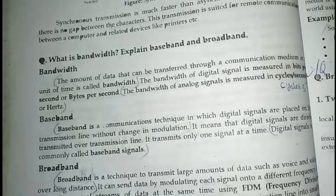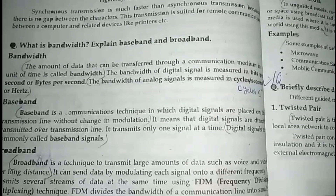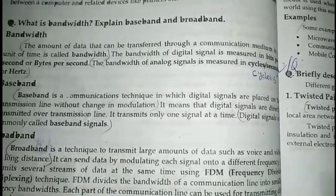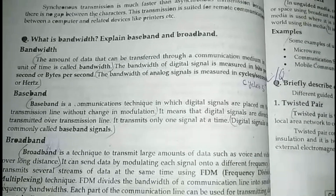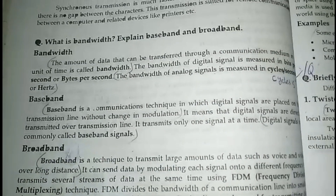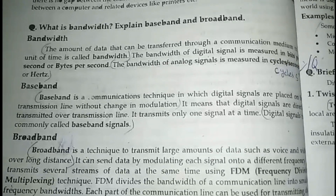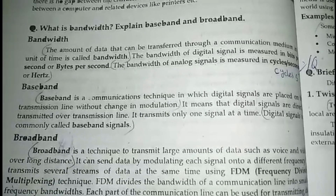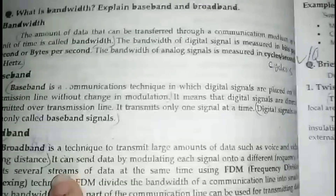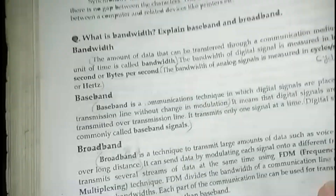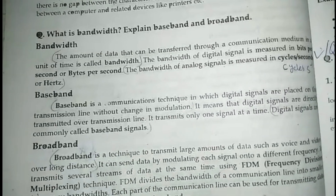Let's start with bandwidth. What is bandwidth? Basically, bandwidth is the amount of data that can be transferred in a unit time. For example, if you consider a car, 5-6 people fit in a car. Similarly, in a communication medium, the maximum data that can be transferred through a communication medium in a unit time is called the bandwidth of the communication medium.